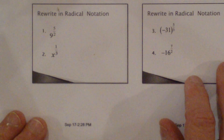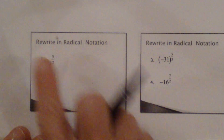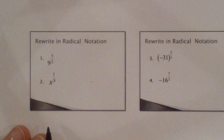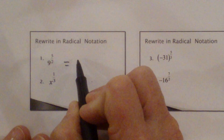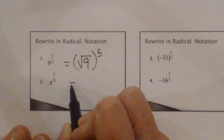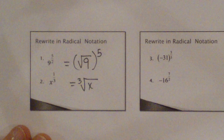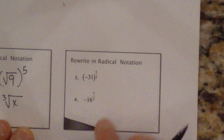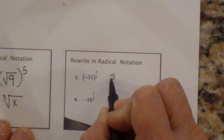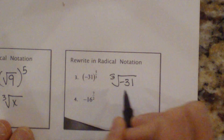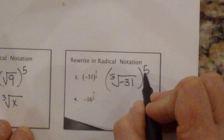So let you guys practice these — stop the video, rewrite those, and we'll check them. This one should be the square root of 9 all to the 5th power. And this one is just the cube root of x. Again, these are for you to practice, but I'm going to go ahead and show you how to rewrite these. This is going to be the cube root, and that negative is under the radical of negative 31, all quantity to the fifth power.